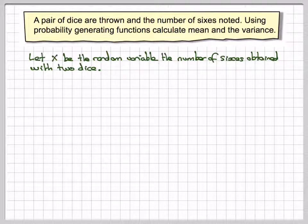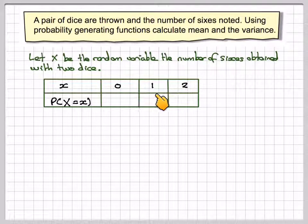If you throw two dice, you can have no sixes, one six, or two sixes. So X will take on the values 0, 1, or 2.